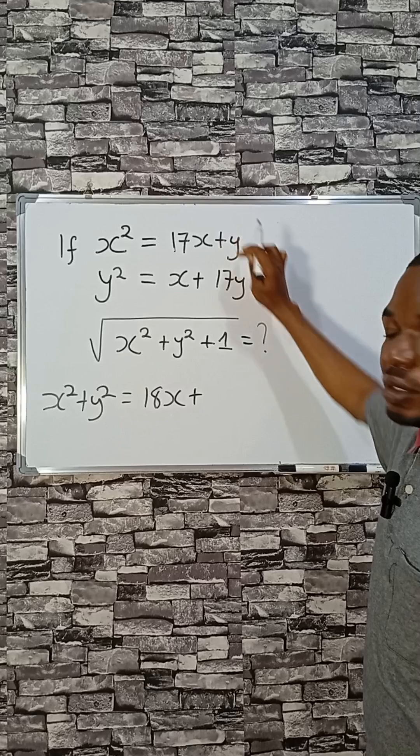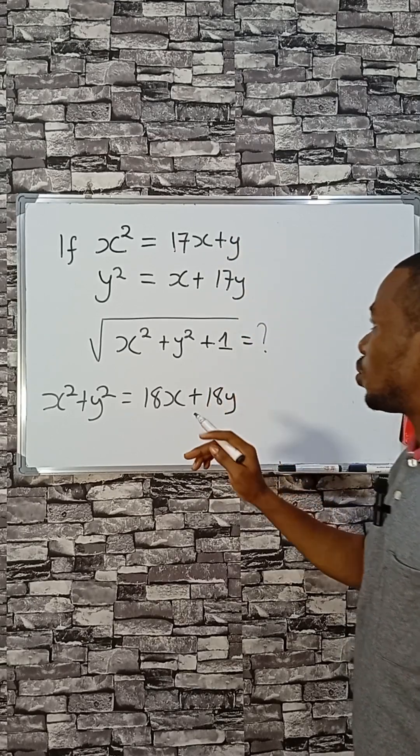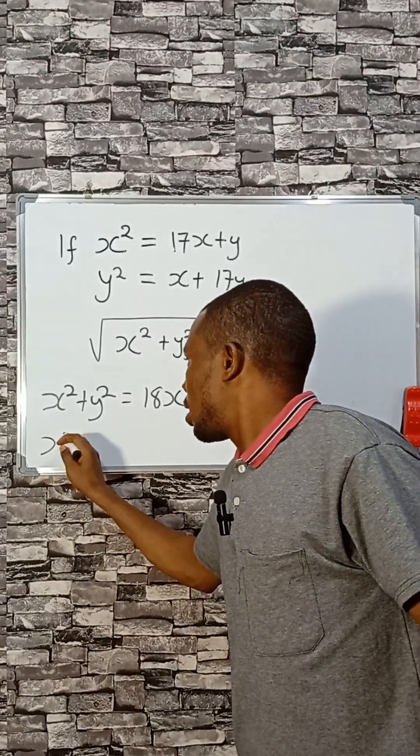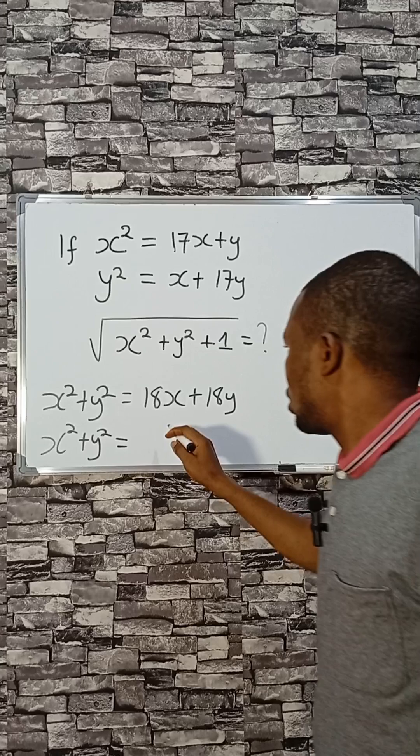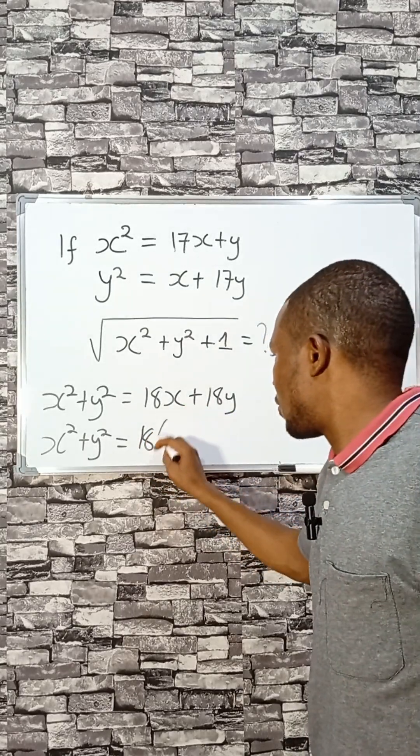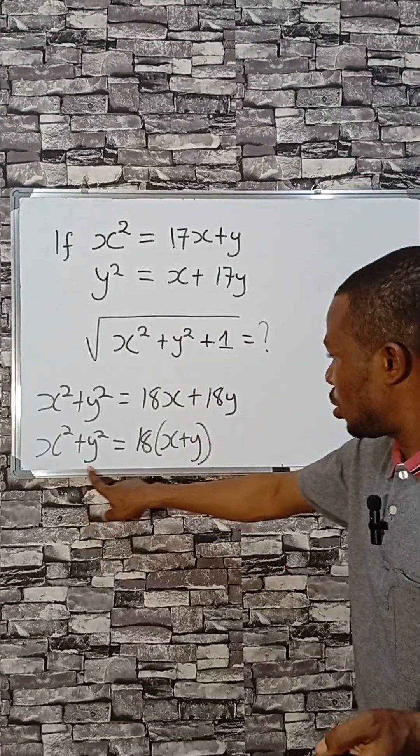Then this plus this will give you 18y. Now if we factorize, since they have 18, 18 is common, we have here x plus y.